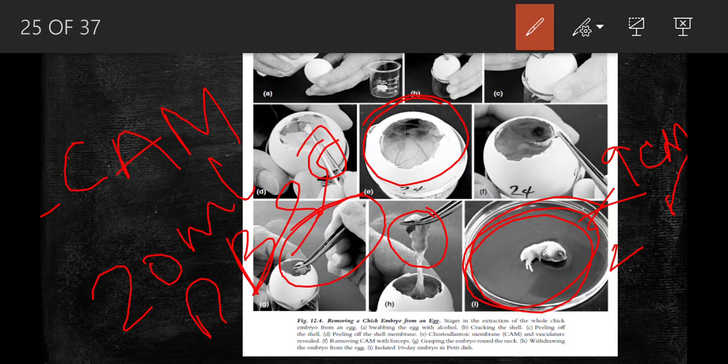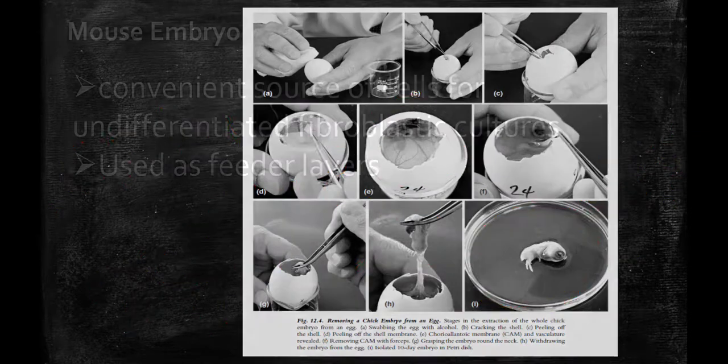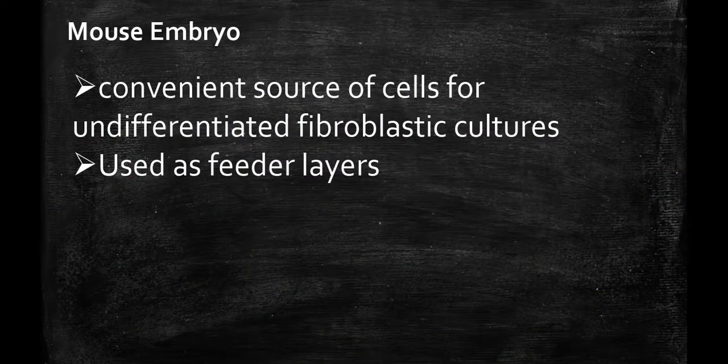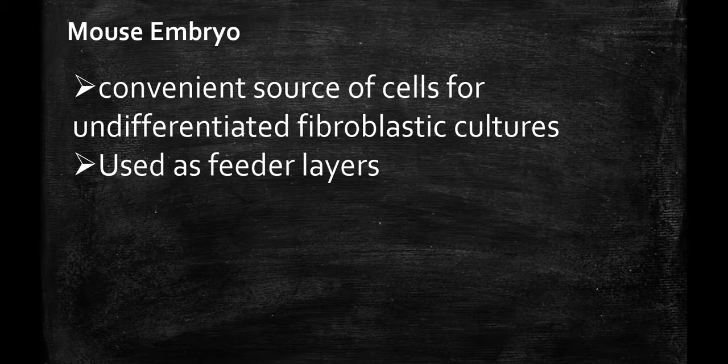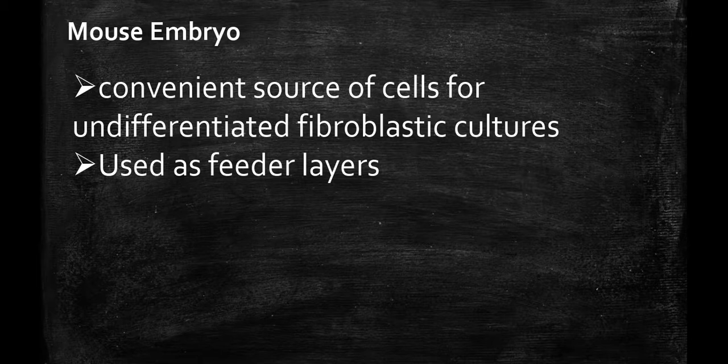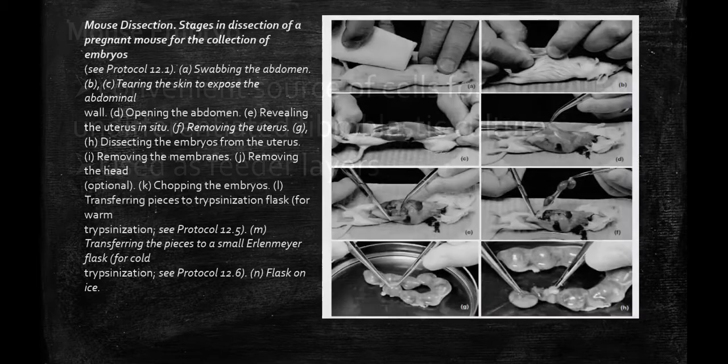Now coming to the mouse embryo, it is mainly used as a source for undifferentiated fibroblastic cultures and is also used for feeder layers.